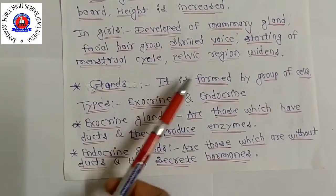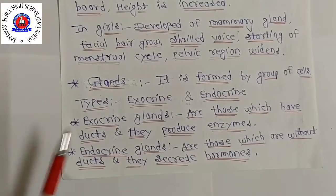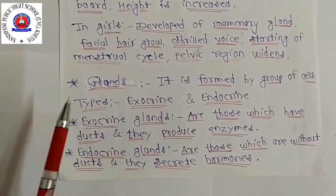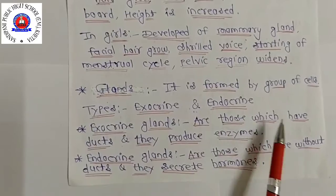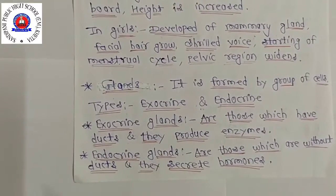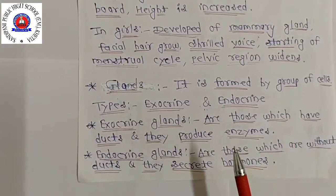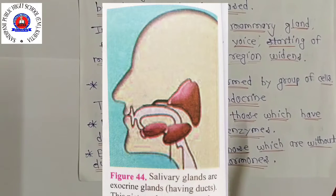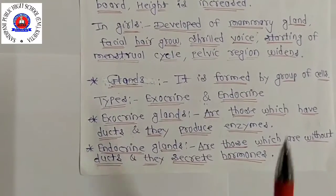Next, let's discuss glands. A gland is a structure formed by a group of cells that secretes a specific substance in the body. Glands are of two types: exocrine and endocrine. Exocrine glands have ducts and produce enzymes. A gland which secretes its product into a duct, for example the salivary gland — which secretes saliva into a duct — is called an exocrine gland.